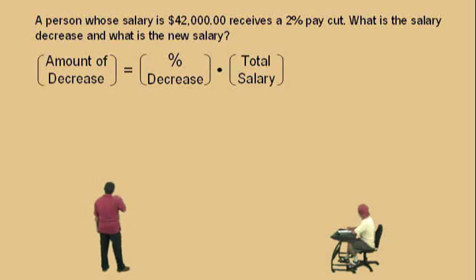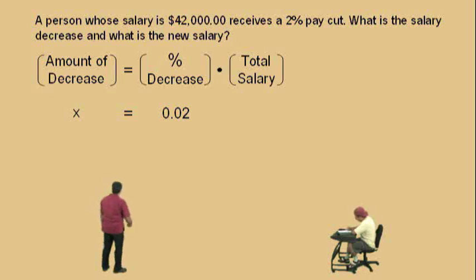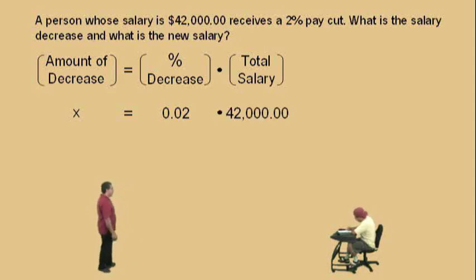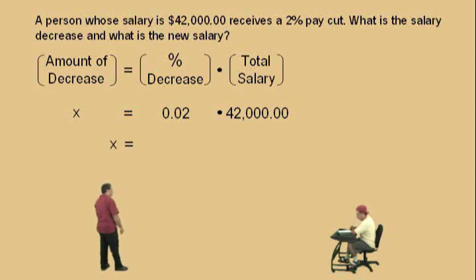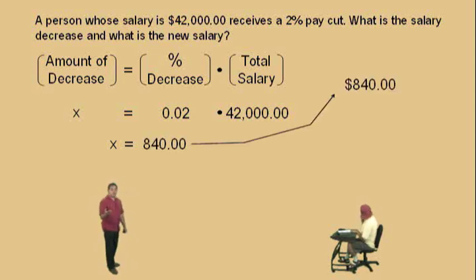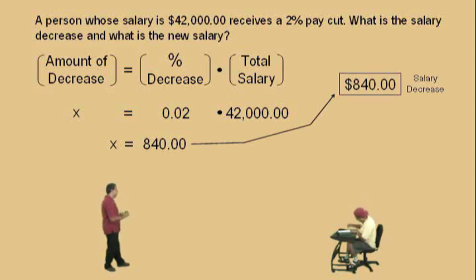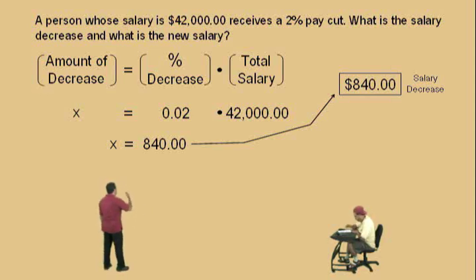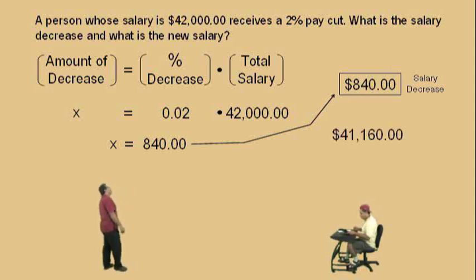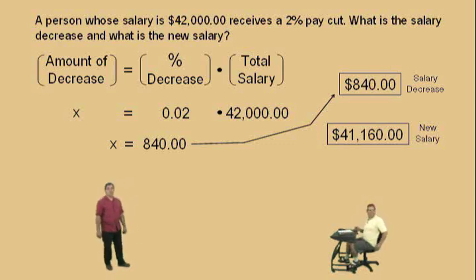And here, we're asked to find the amount of decrease, so we'll represent that with x. What's our percent decrease as a decimal, Charlie? 0.02. Very nice. And our total salary? 42,000. Very nice. Now, to get the amount of decrease, we just find that product — get your calculator out, Charlie. And what did you get? 840. Very nice there, Charlie. And so $840 is the amount of the salary decrease. Now, to get the new salary, Charlie, all you have to do is take the old salary, which is $42,000, subtract the salary decrease, and what did you get? 41,160. Very nice there, Charlie. And that is the new salary.